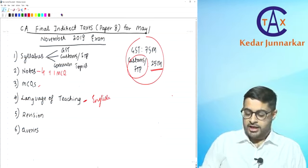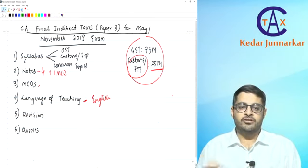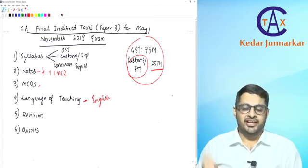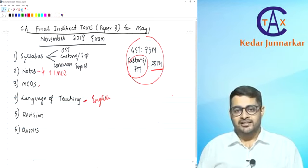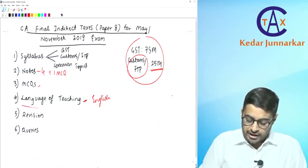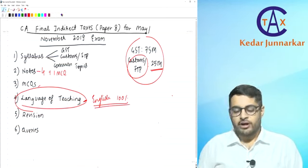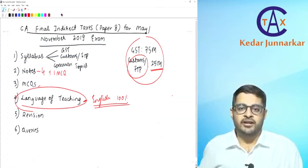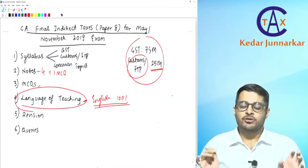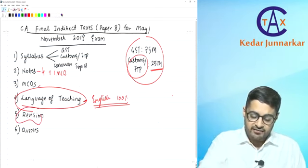An important point: I teach CA Final direct and indirect taxes, Papers 7 and 8, and also the International Tax elective. All these papers are required to be written in English. My idea is that if you learn in English, it is very easy to reproduce things in English. The language of teaching will be 100 percent in English — I won't speak in Hindi or any vernacular language. Simple English will be used while discussing concepts.